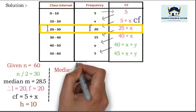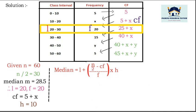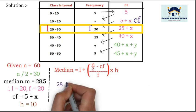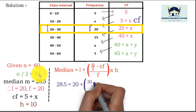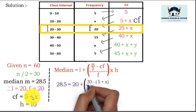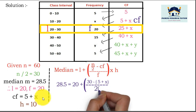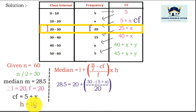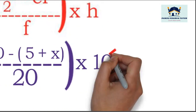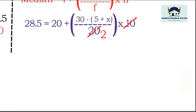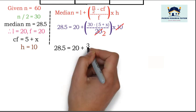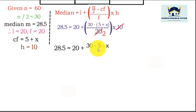Now write the formula: Median = l + [(n/2 − cf) / f] × h. Substituting: 28.5 = 20 + [(30 − (5 + x)) / 20] × 10. Simplifying: 28.5 = 20 + [(25 − x) / 2].